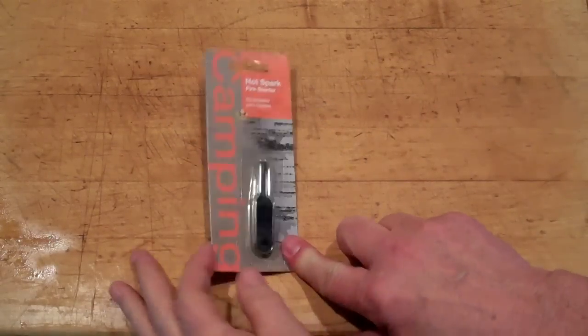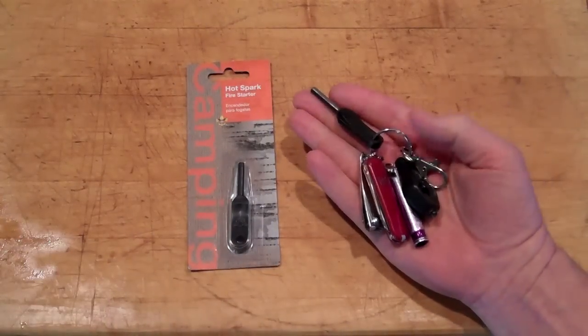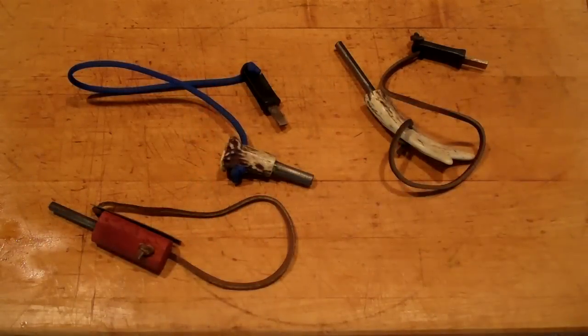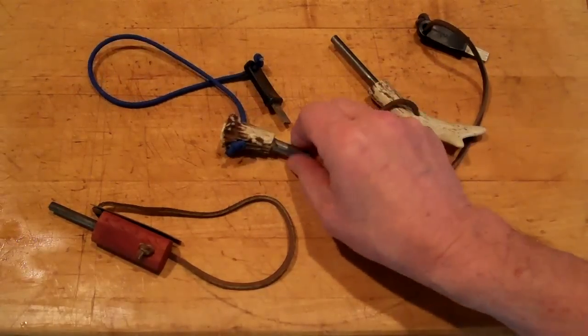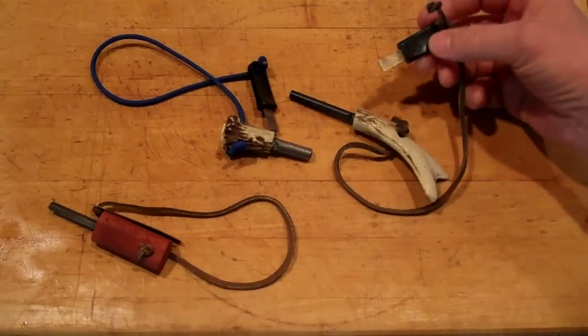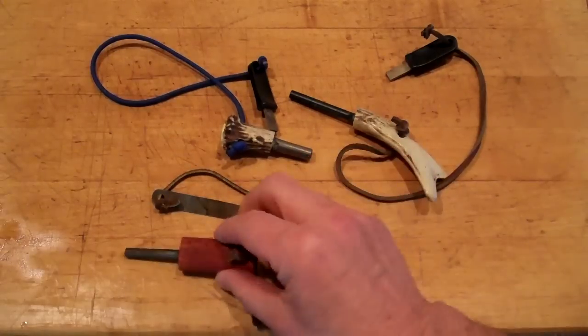This is a Boy Scout Hot Spark. It's a very good product, very easy to carry. I carry one with me all the time on my keyring survival kit. Here are some other good quality rods. These come off the Survival Common Sense website. They're made with antlers and they have special strikers with them. This one is another commercial one. All of these have been used pretty extensively.